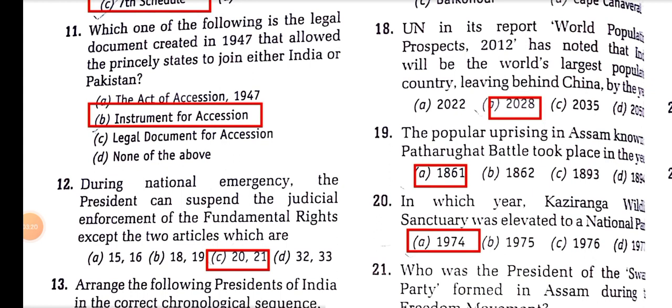During national emergency, the President can suspend the judicial enforcement of Fundamental Rights except two articles — Article 20 and Article 21. Article 20 is a remedy for arrest and Article 21 is the right to life and personal liberty, which cannot be taken away at any time.